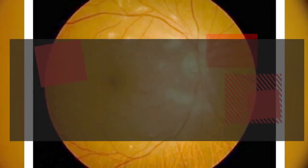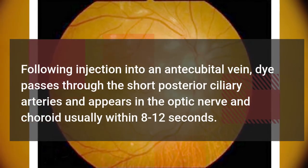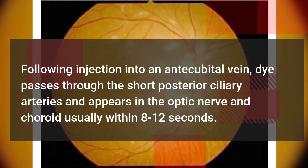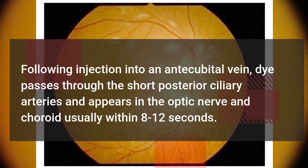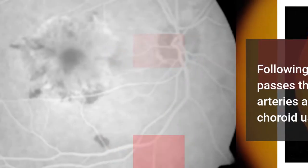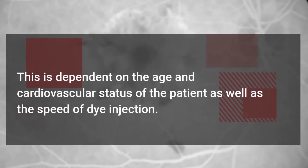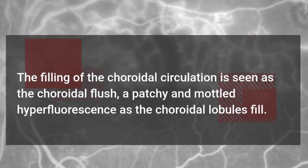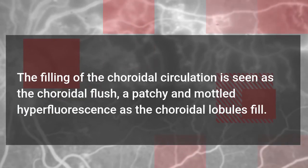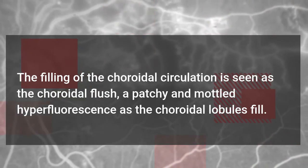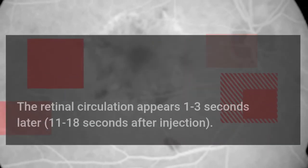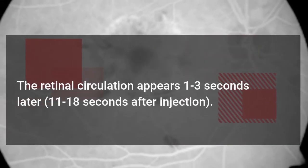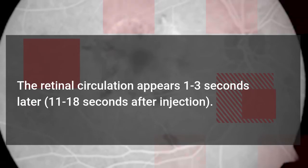Normal fluorescein angiography. Following injection into an antecubital vein, dye passes through the short posterior ciliary arteries and appears in the optic nerve and choroid usually within 8 to 12 seconds. This is dependent on the age and cardiovascular status of the patient as well as the speed of dye injection. The filling of the choroidal circulation is seen as the choroidal flush, a patchy and mottled hyperfluorescence as the choroidal lobules fill. The retinal circulation appears 1 to 3 seconds later, 11 to 18 seconds after injection.